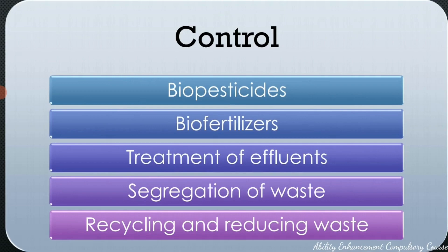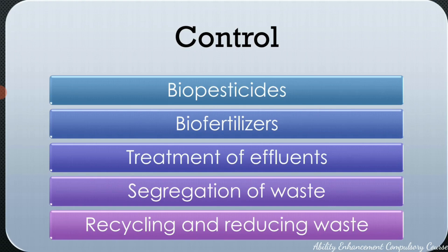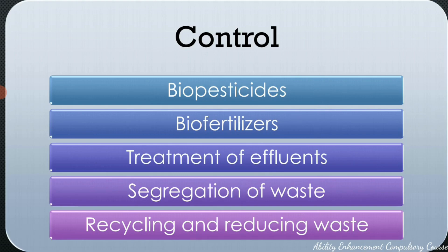Coming to the control measures — the best way to control soil pollution is to shift from chemical fertilizers and agrochemicals to organic options like biopesticides or biofertilizers. Reducing the usage of chemicals in the field will definitely help in controlling soil pollution. Using compost, using biopesticides — that is, microorganisms that kill pests — or using microorganisms and plant waste as fertilizers are all examples of safer, eco-friendly options in place of chemicals.